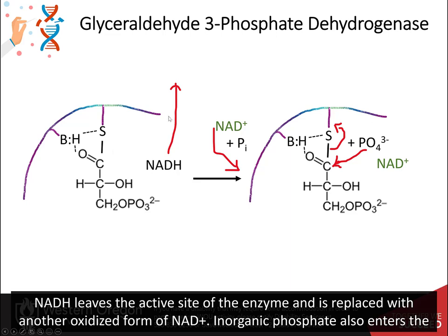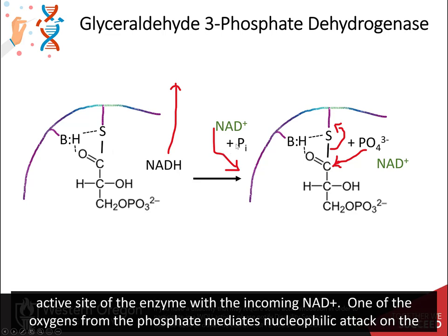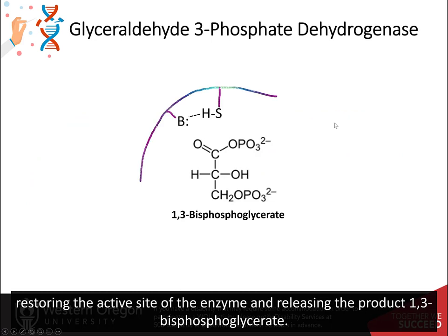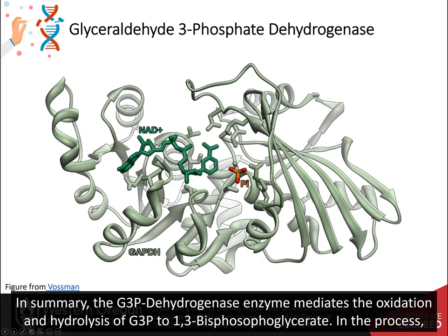NADH leaves the active site of the enzyme and is replaced with another oxidized form of NAD. Inorganic phosphate also enters the active site of the enzyme with the incoming NAD. One of the oxygens from the phosphate mediates attack on the carbonyl carbon, forming a covalent bond. The thiol serves as a leaving group, restoring the active site of the enzyme and releasing the product 1,3-bisphosphoglycerate.